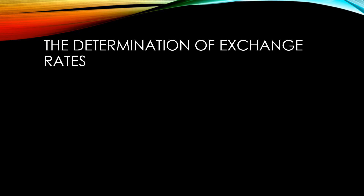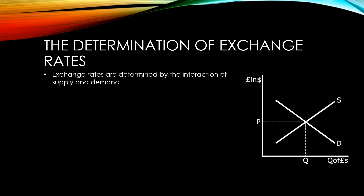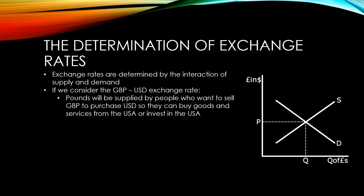Exchange rates are determined by the interaction of supply and demand. If we consider the pound to US dollar exchange rate, pounds will be supplied by people who want to sell pounds in order to purchase US dollars, so they can buy goods and services from the US, or invest in businesses in the US, or put money into banks in the US.